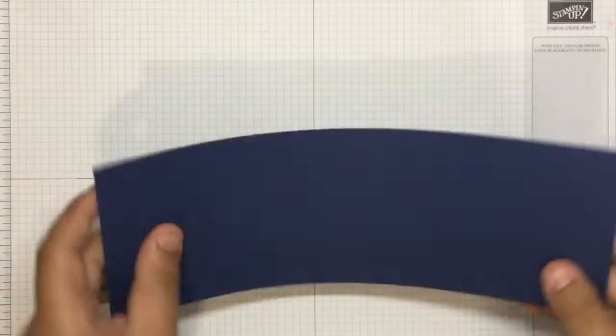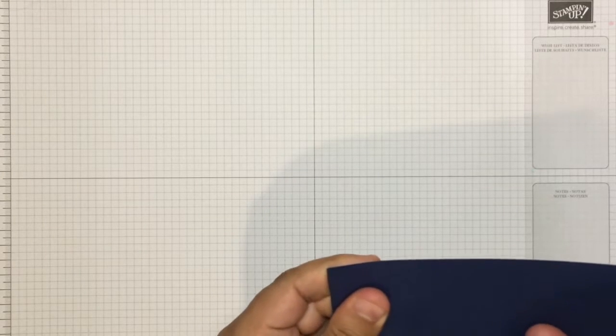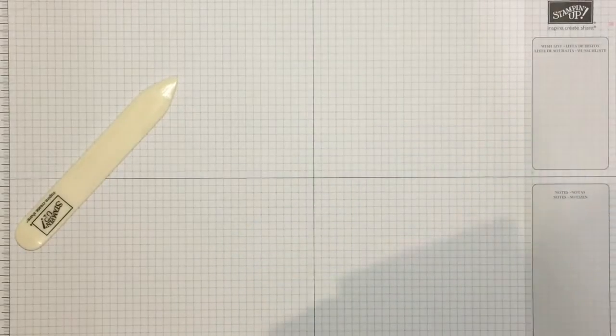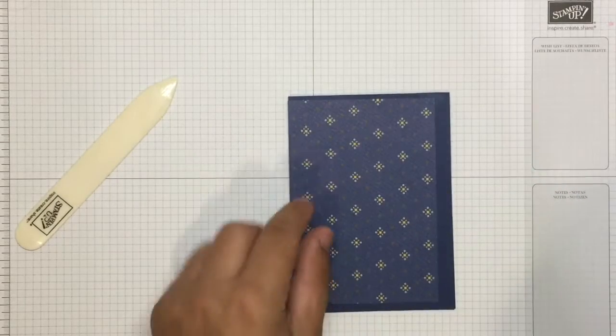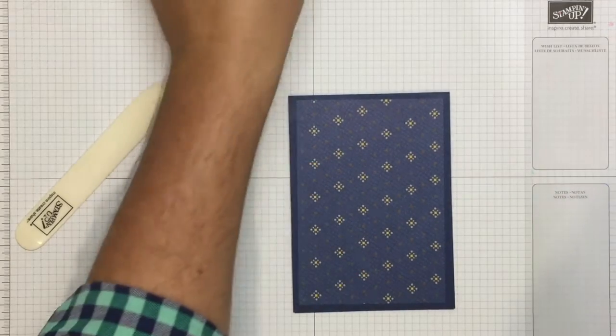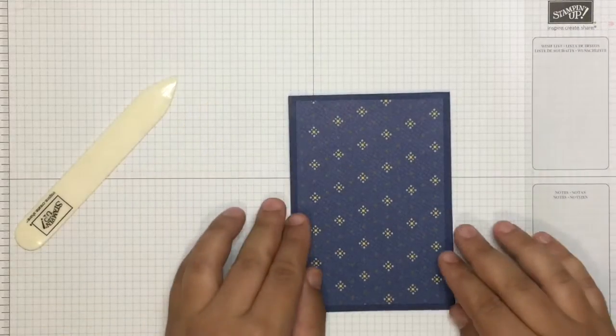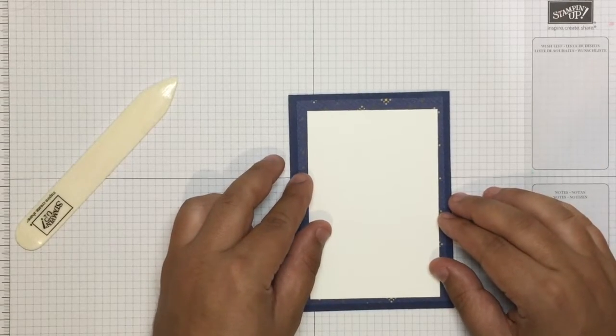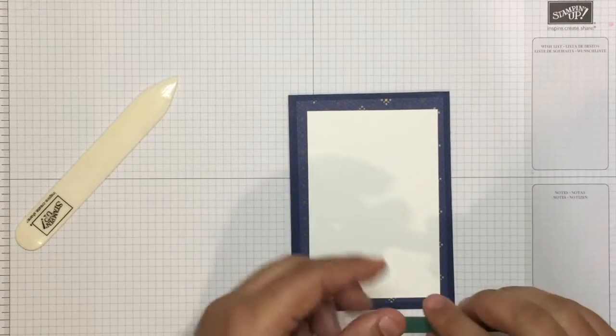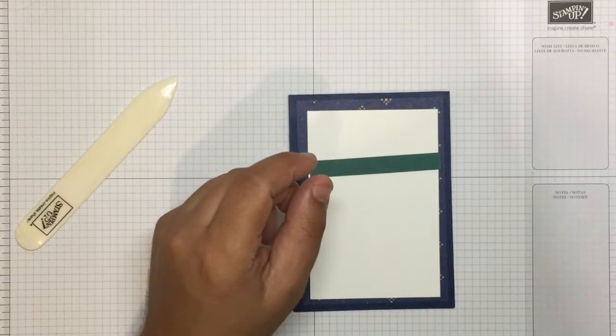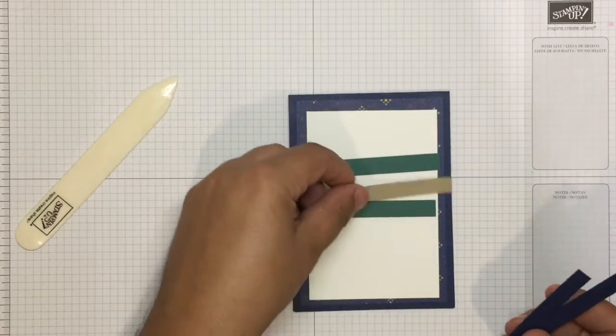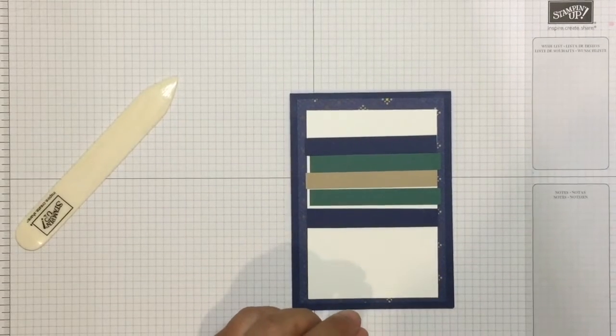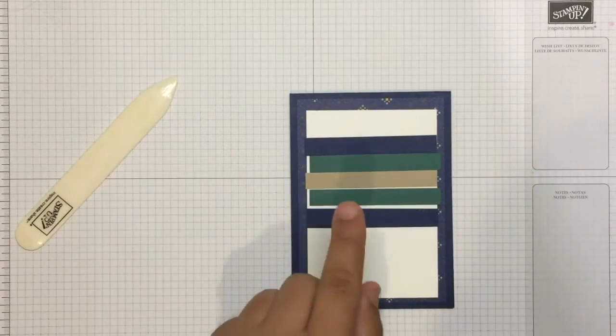So first of all we have the card base. Then we have a layer of the DSP. I've used a different one on this one. This one here had some green stripes. This one here has some other different patterns there. And then I've got the layer of the white. Now what I've done is I've pre-cut these just so you don't have to wait for me to do it. Because this is not the part of the card that I really want to show you. It's the other part of the card. So it'll just go like that.